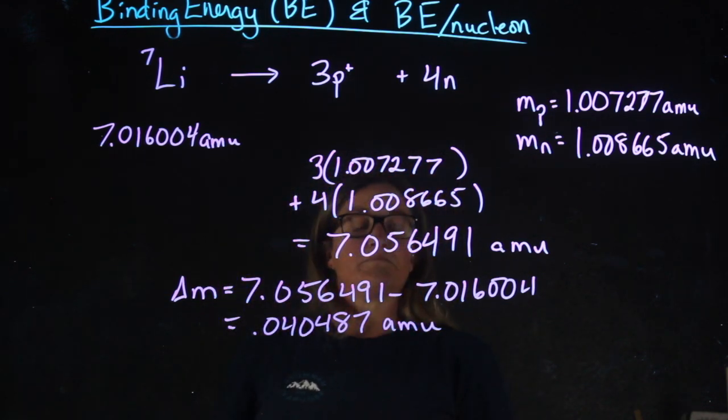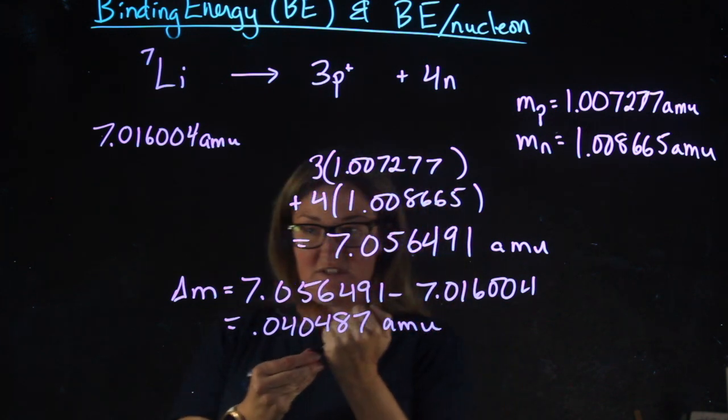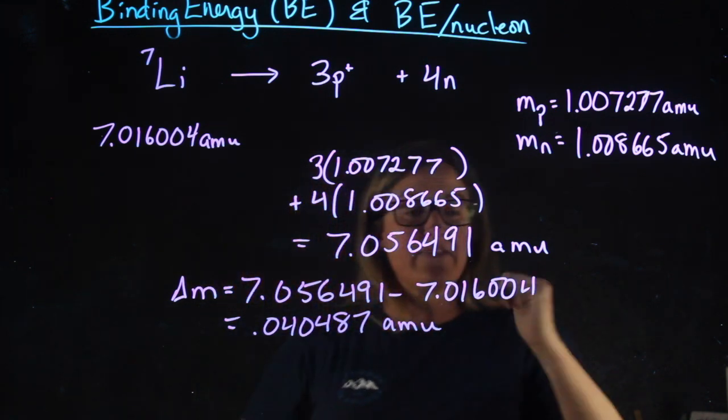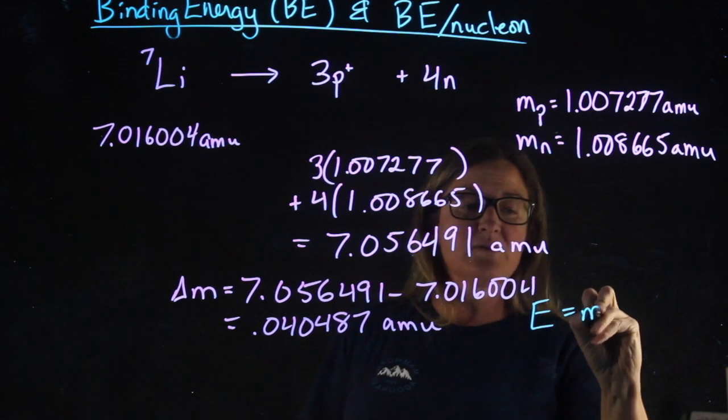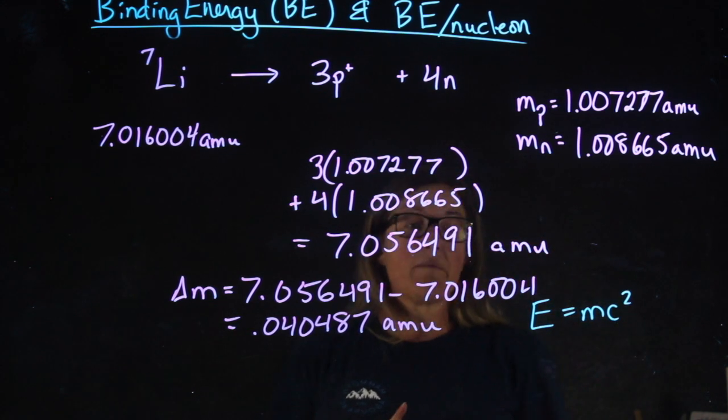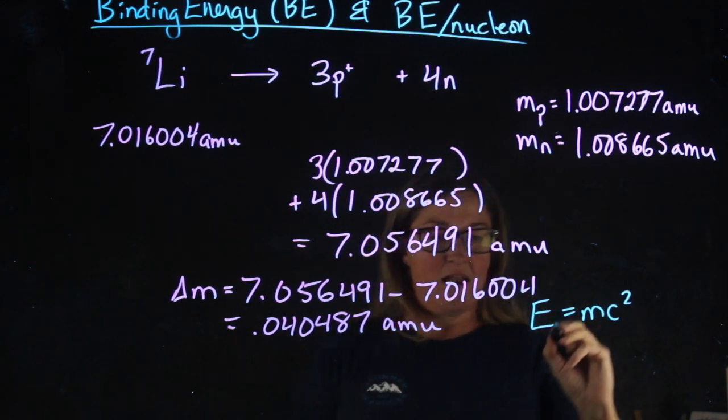We're getting there. Now I want to find the energy associated with that. When I said we were going to use Isaac Newton's equation E equals mc squared, we are, but we're going to do a slightly different form of it.